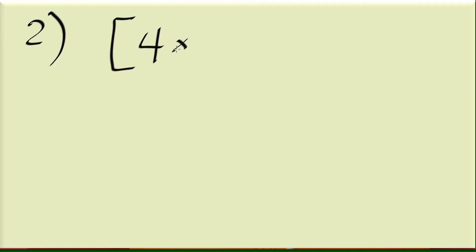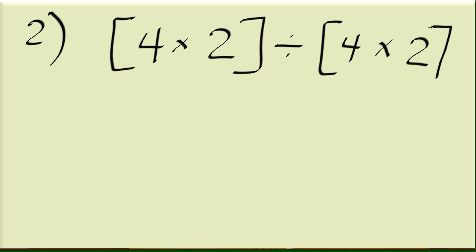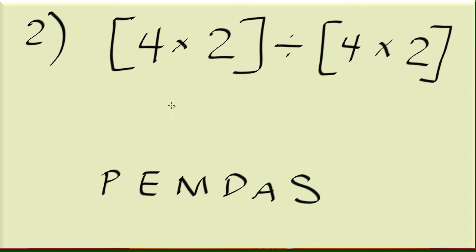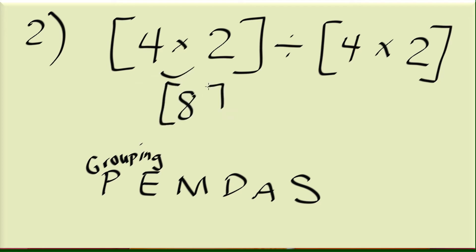Example 2: 4 times 2, divided by 4 times 2 — but now with bracket grouping symbols. Again in PEMDAS, this bracket here means parentheses — that's the grouping symbol. P here represents grouping, and I'm going to call it a grouping symbol because there's really something we have to perform inside it, and that is multiply the 4 and 2, which gives us 8.